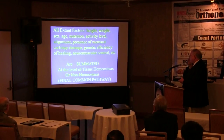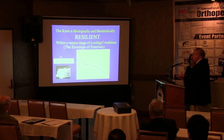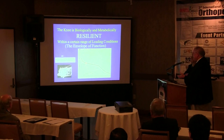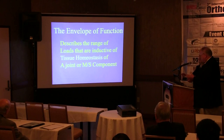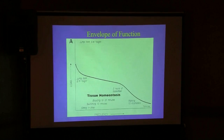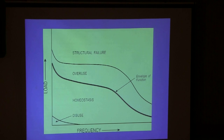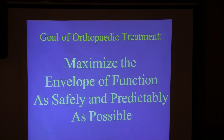Tissue homeostasis is the final common pathway critical in joint function. The concept of the knee is like a biological transmission — every transmission has a torque envelope, and so does the knee. We call this the envelope of function: a load-frequency distribution defining a safe range of loading for a given knee or joint system. There are four zones of differential loading: disuse, homeostasis, overuse, and structural failure. The goal of orthopedic treatment is to maximize the envelope of function as safely and predictably as possible.